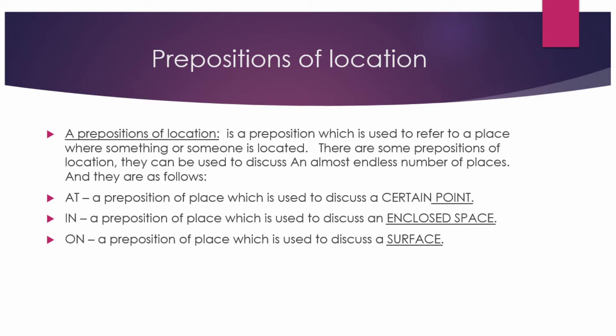There are some prepositions of location that can be used to describe almost endless numbers of places. They are as follows: 'at' is a preposition of place used to describe a certain point; 'in' is used to describe an enclosed space; and 'on' is used to describe a surface.